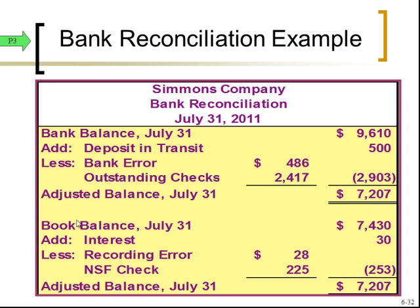On the book side, we start with $7,430, add $30 of interest, subtract the $28 recording error, and subtract the $225 NSF check. We come up with $7,207 — just like the bank side. We're good to go.